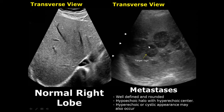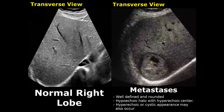This image shows multiple metastatic lesions in the liver, again demonstrating the target sign. Some metastatic lesions can have cystic components as well. Over here we have the hypoechoic halo and a hyperechoic inner region followed by a cystic area in this metastatic lesion.